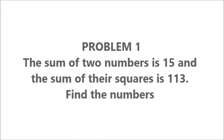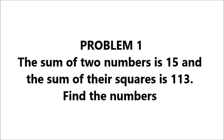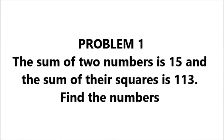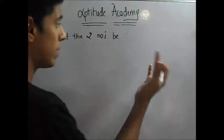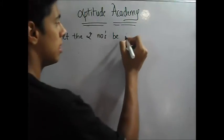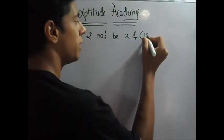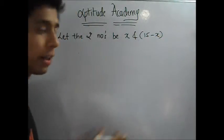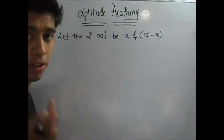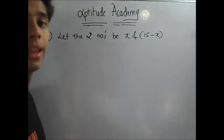Problem 1: The sum of two numbers is 15 and the sum of their squares is 113. Find the numbers. Now in the first problem, they have said that two numbers when added will give you 15. Let the numbers be x and 15 minus x. If you didn't understand why I took this, you need to go and watch my first video. We have taken this so as to eliminate the variable y.